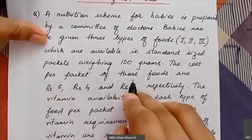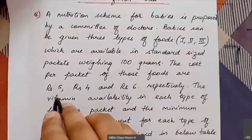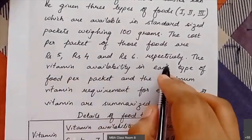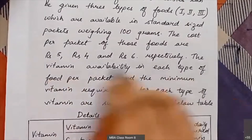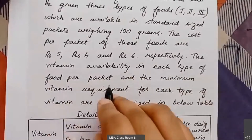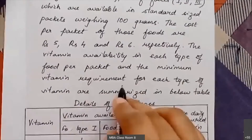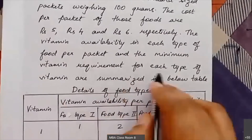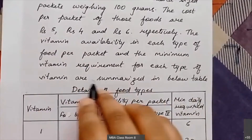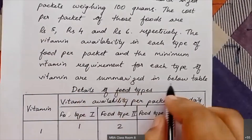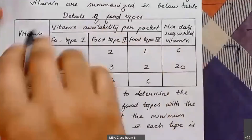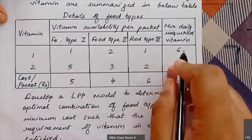The cost per packet of those foods are rupees five, rupees four, and rupees six respectively. The vitamin availability in each type of food per packet and the minimum vitamin requirement for each type of vitamin are all summarized in the table. The table is already given in the question itself, so you don't have to draw another table.